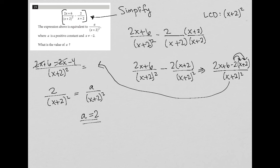And then it goes on to say where a is a positive constant and x does not equal negative 2. That's very true here. What is the value of a? Well, we just found it. The value of a is 2.